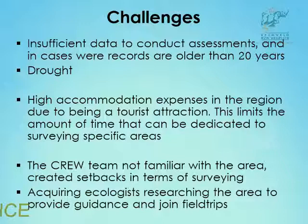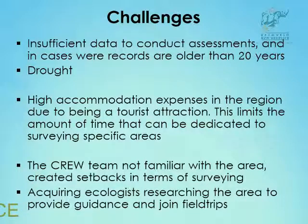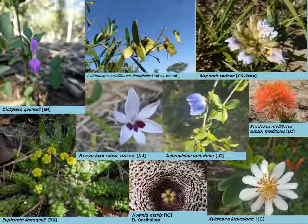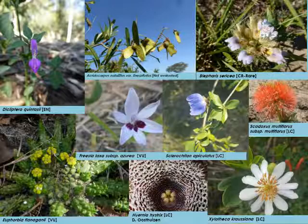These are some of the species we found. We managed to find Lephora sericea, which is critically rare; Freesia laxa subspecies Azaria, which is vulnerable; Euphorbia flanaganii, which is also vulnerable; and Dicliptera. Thank you.